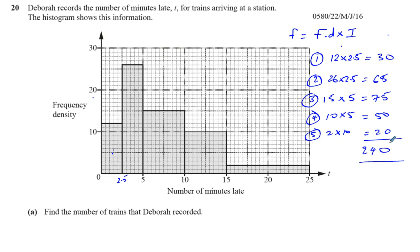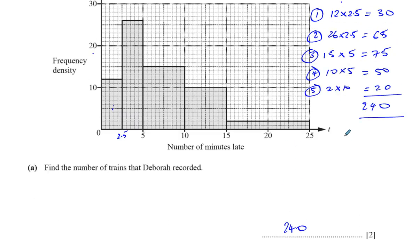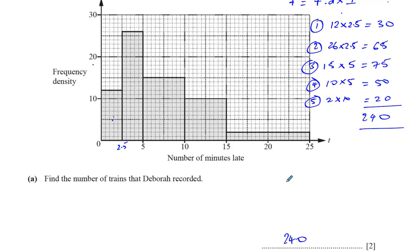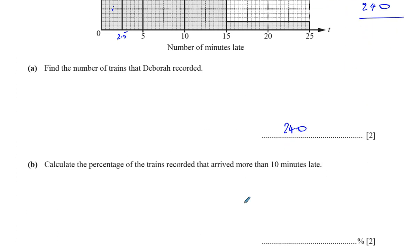That's the number of trains Deborah has recorded, so the answer for Part A is 240. The steps are shown next to the histogram. Now, Part B says: calculate the percentage of trains recorded that arrived more than 10 minutes late.